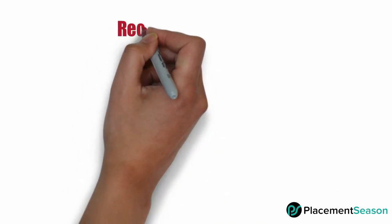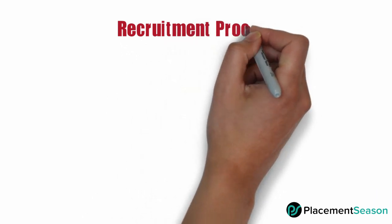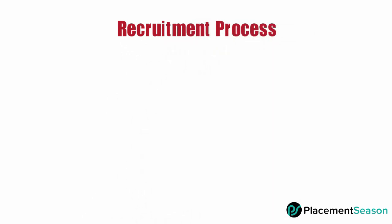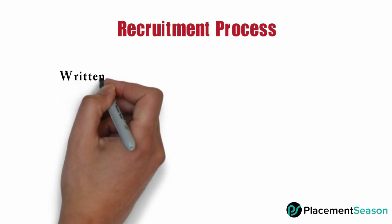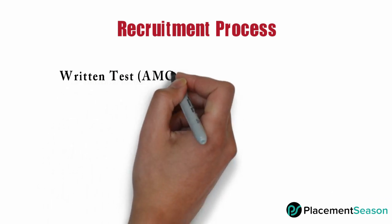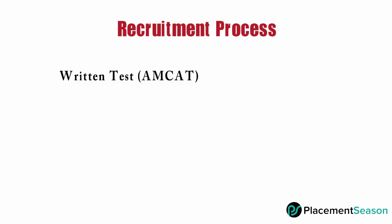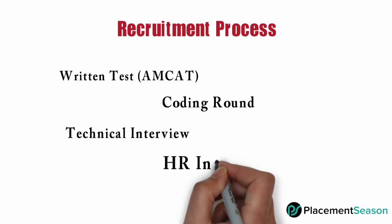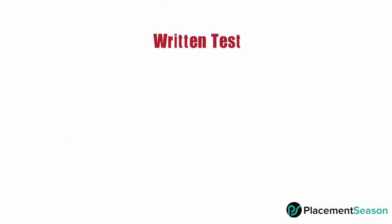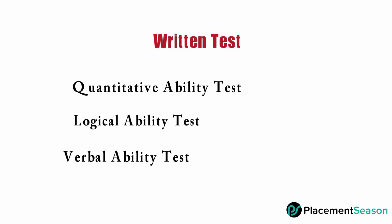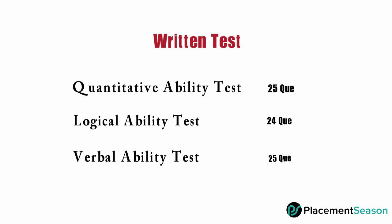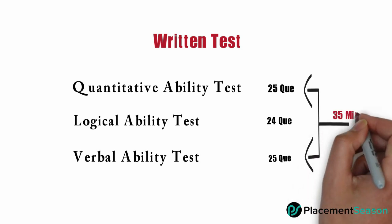Let's get some brief idea about the company's recruitment process. There will be four rounds in the entire process: first, a Written Test by MCAT; then a Coding Round; then a Technical Interview; and finally an HR Interview. The Written Test majorly contains three sections: Quantitative, Logical, and Verbal Ability. There will be 25 questions for the Quantitative and Verbal sections and 24 for the Logical section, with 35 minutes time each.